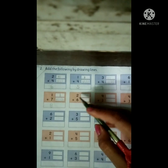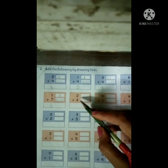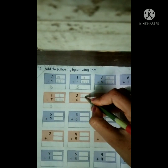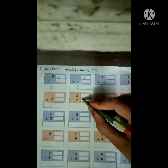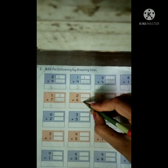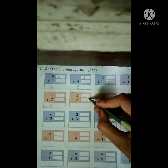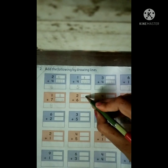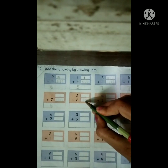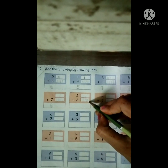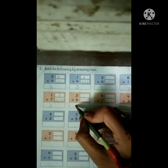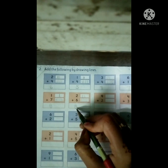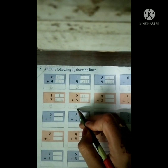Very good. Next, two plus six. Draw two lines, and draw six lines — one, two, three, four, five, six. And count together: one, two, three, four, five, six, seven, eight. So there are eight lines — two plus six is equal to eight.